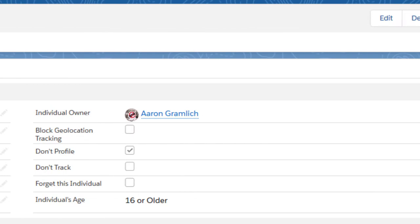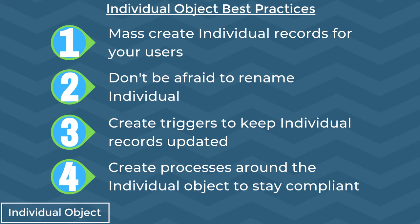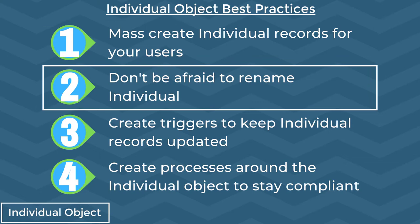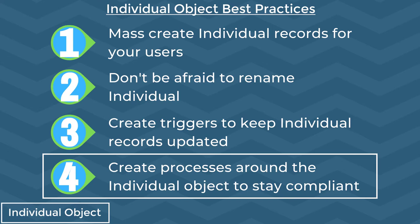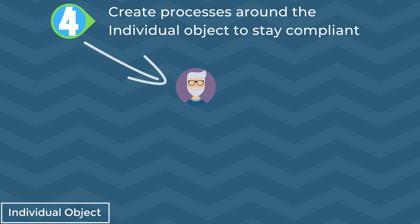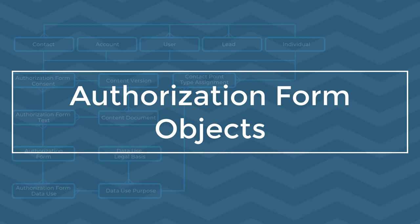On the individual record itself, we're going to store information such as the person's age, whether or not you have the right to store their personal information, and their overall data preferences, to name a few. A few best practices for the individual object: first, initially you'll probably want to mass-create individual records for your users. Second, consider renaming the individual field on contact, lead, and user page layouts to match your company's own terminology, such as renaming it to consent record or data privacy record. Keep in mind the individual record does not update automatically when your contact, lead, or user records change, so you may want to create a trigger to keep your individual records up to date. And lastly, create processes around your individual object — tracking consent alone is not enough. You'll need to create business processes to opt the consumer out, export data, anonymize PII, and all of these things to make sure you're staying compliant.